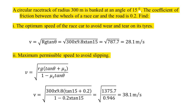Substituting values — R = 300, g = 9.8, θ = 15°, μs = 0.2 — into the formula gives a maximum speed of 38.1 m/s. The optimum speed is 28.1 m/s.